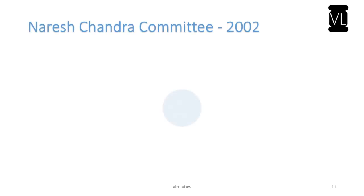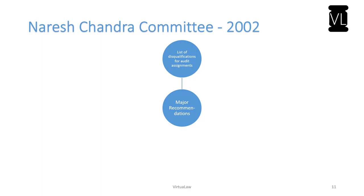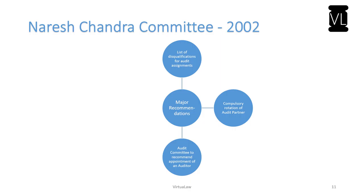In 2002, the Naresh Chandra Committee was constituted during a time of much crisis. Its major recommendations were: firstly, the list of disqualifications for audit assignments was clearly specified; it recommended mandatory compulsory rotation of audit partners; it wanted the audit committee to recommend the appointment of auditors; and finally, it required joint certification by the CEO and the CFO in terms of the company's compliance, affirming that the company is an ongoing or perpetual concern.